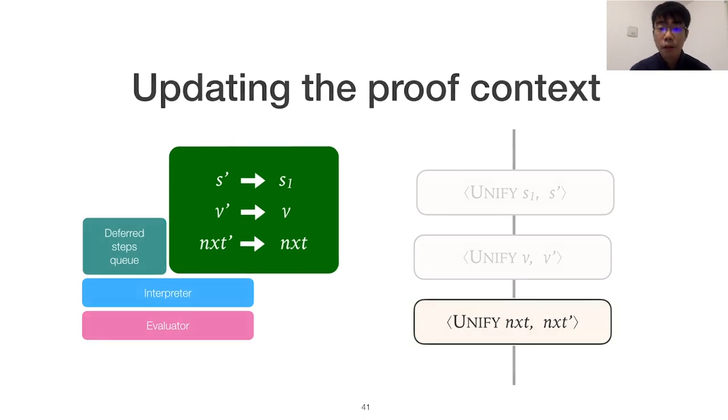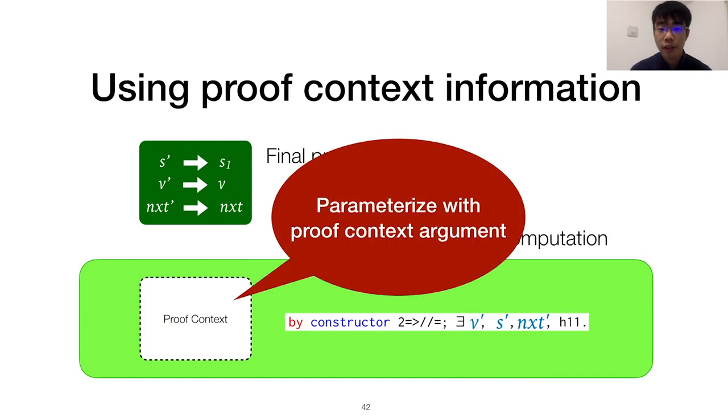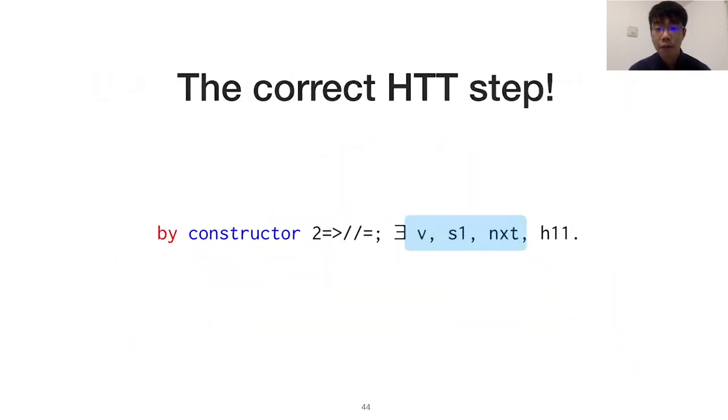Now, the enqueued computation can access this substitution knowledge at the end of the proof if we parameterize it with a proof context argument and invoke it with the final proof context. This way, the emitted step will have the correctly substituted existential variable names. That was an overview of two features of our proof evaluator inspired by continuations and accumulators.